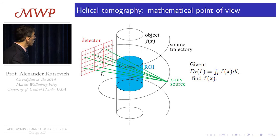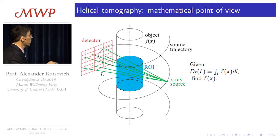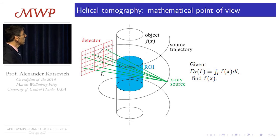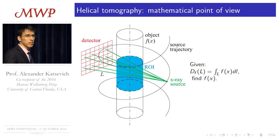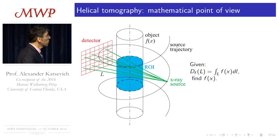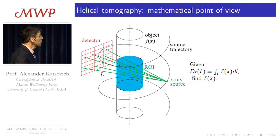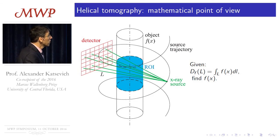The detector consists of a bunch of pixels. If you connect the source with each individual pixel, you get a pencil beam, and for this pencil beam I can apply the formula from the previous slides to get the line integral. Mathematically, we don't really care about the physical meaning of the function being reconstructed — we just forget that it's an attenuation coefficient and call it some function f that we want to reconstruct. Our data consists of the line integrals of that unknown function f along rays with vertex on the helix, and the problem is to find f given these line integrals.